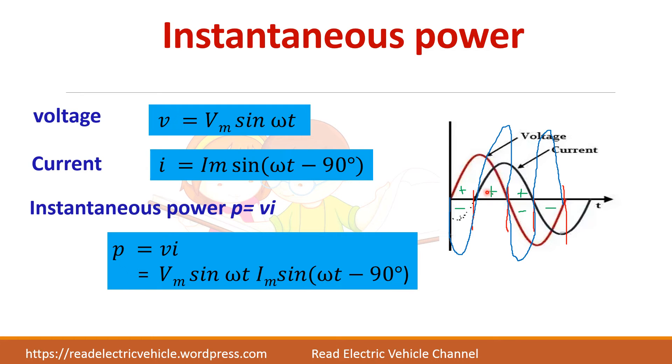Here both are positive, so power is positive. Here one is positive and the other is negative, so you will get negative power. Again positive power. So by seeing this itself you can understand that the average power will be zero.